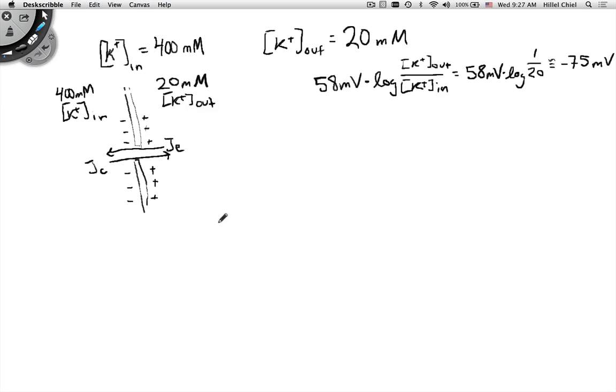Those two are equal and opposite, so they're in equilibrium. This will be maintained indefinitely. If the gradients don't break down, they'll be maintained indefinitely.